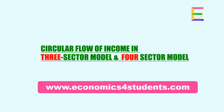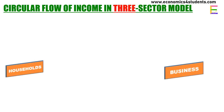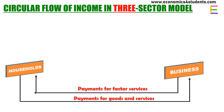Welcome to Economics for Students. We will explain the circular flow of income in the three-sector model and the four-sector model. We already know the nature of circular flow of income by looking at the primary flows between households and firms — payment for factor services goes from business to households, and payment for goods and services goes from households to business.